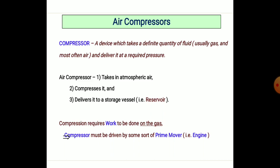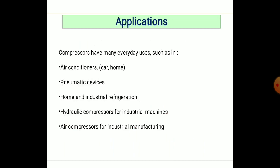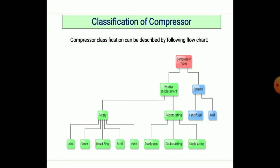A piston-cylinder arrangement is provided to achieve this work. The compressed air is highly usable and essential for various processes in industry, such as air conditioners in cars and home appliances, pneumatic devices used in workshops — pneumatic tools for loosening and tightening nuts and bolts — industrial refrigeration, hydraulic compressors, and industrial manufacturing processes.